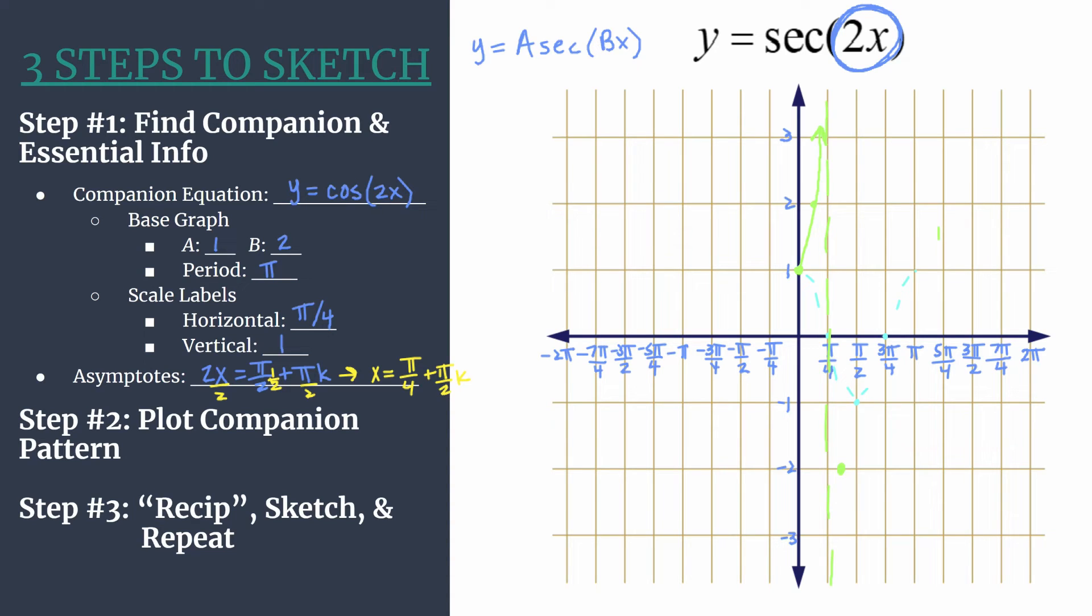And the reciprocal of negative one, of course, is just negative one. So you have a secant curve down here. You have another vertical asymptote where there was an original zero at 3π over 4.